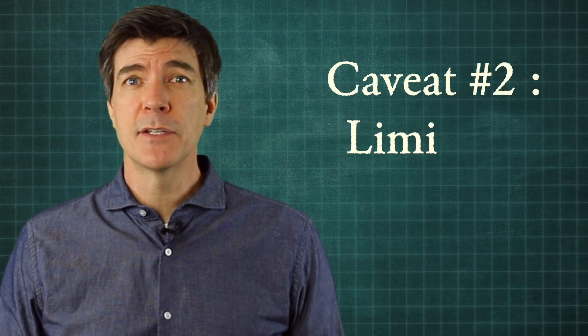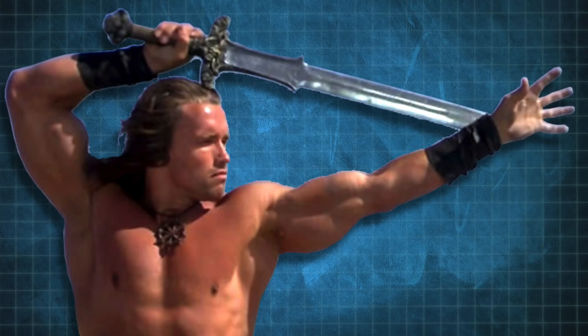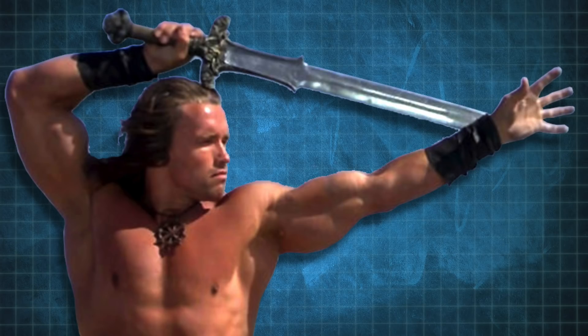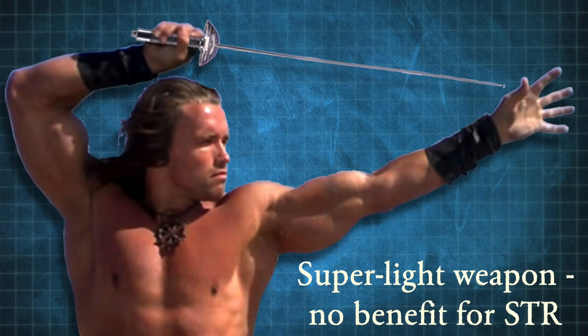Secondly, there is a limit to how fast muscles can contract even if they are super strong. So if the fighter in our example were using a light weapon, the contractile velocity of the muscle may already be maxed out, giving him no speed benefit for added strength. In that case, swing speed would become more of a dex issue, but the heavier the weapon, the better the Newtonian model will fit.